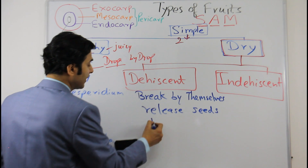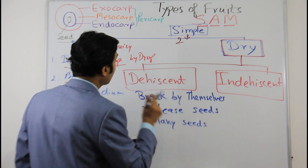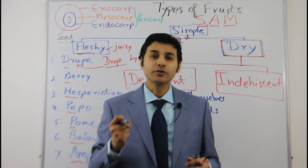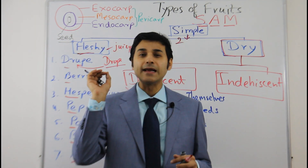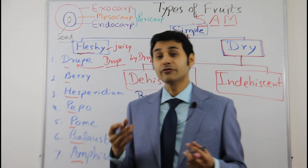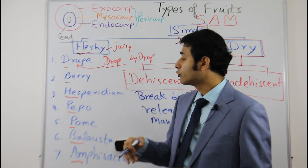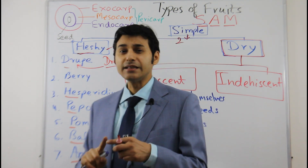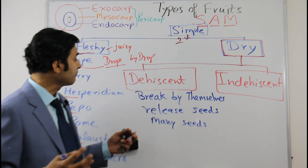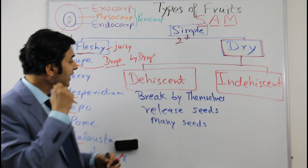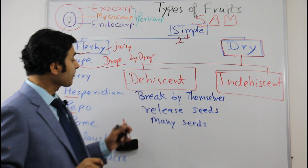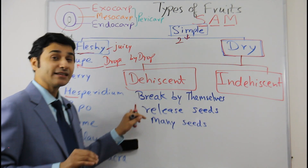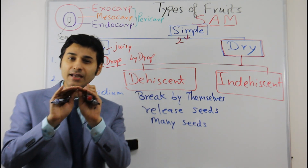In fleshy fruits, animals are attracted, they eat the flesh, and then throw out the seeds in forests or other places — that is how fleshy fruits spread to distant places and increase their population. But in dry fruits, they do not have this method of attracting animals, so they have evolved their own method: they break by themselves. That happens in dehiscent fruits — when they mature they break by themselves and throw the seeds out.